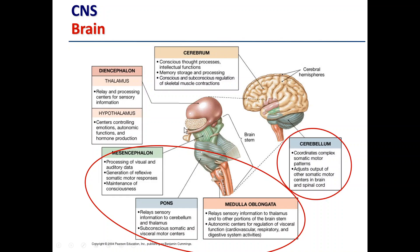The cerebellum is involved in coordinating complex movement patterns — it particularly helps to smooth out movement, which we'll look at in more detail shortly. The midbrain consists of the thalamus, hypothalamus, and the cerebrum, and we act upon a lot of the sensory information that's been relayed back to the brain in these areas.